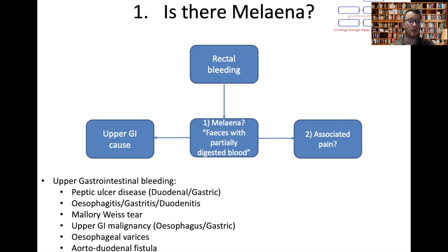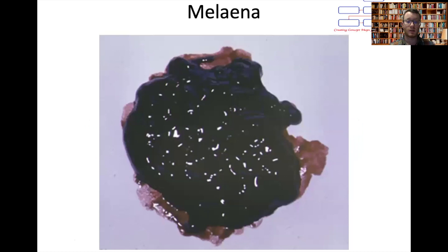Upper GI causes for bleeds include inflammatory conditions, ulcers, malignancies, and vascular disorders. So first: is it upper GI? Looking at an image of melaena — you can really note it's very dark, black, and tarry.